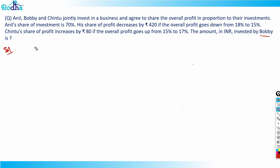Let's set up variables. Anil's amount is 'a', Bobby's amount is 'b', and Chintu's amount is 'c'. Let the total investment be 100x. Since Anil has a 70% share of investment, Anil's share will be 70x.